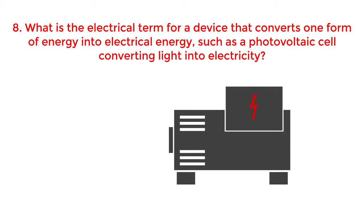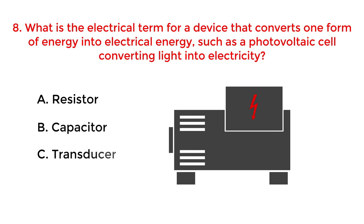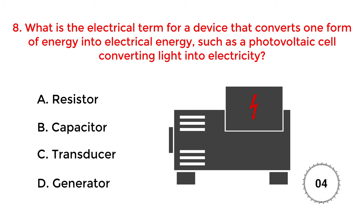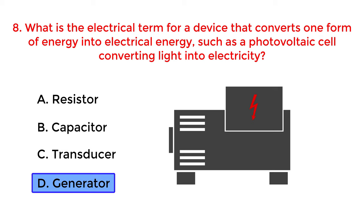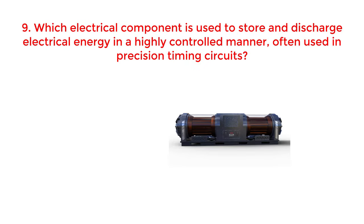What is the electrical term for a device that converts one form of energy into electrical energy, such as a photovoltaic cell converting light into electricity? A. Resistor. B. Capacitor. C. Transducer. D. Generator. The correct answer is option D: Generator.